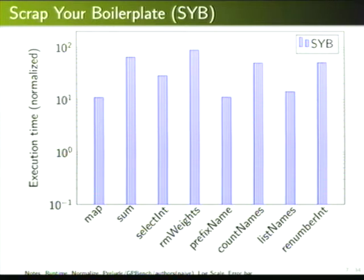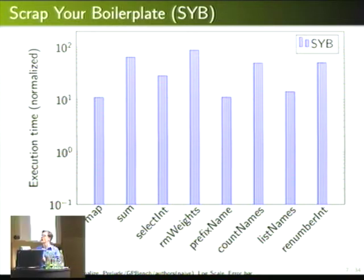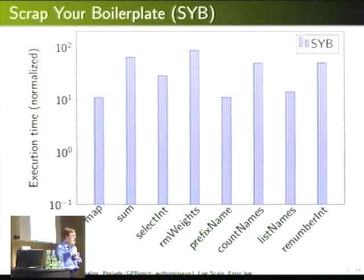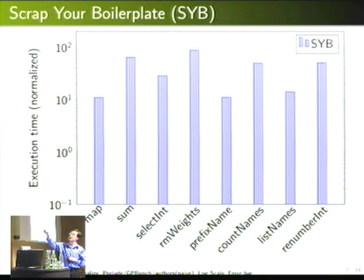Unfortunately, Scrap Your Boilerplate is kind of slow. This diagram shows the rough performance of Scrap Your Boilerplate normalized to handwritten code. We see that Scrap Your Boilerplate is ten times slower here, and up here it's a hundred times slower than handwritten code. These benchmarks are borrowed from the GHC prelude for the handwritten code and the GPbench generic programming benchmark. Note we're on a log scale — the results are so bad I have to use that to be able to see all the results.